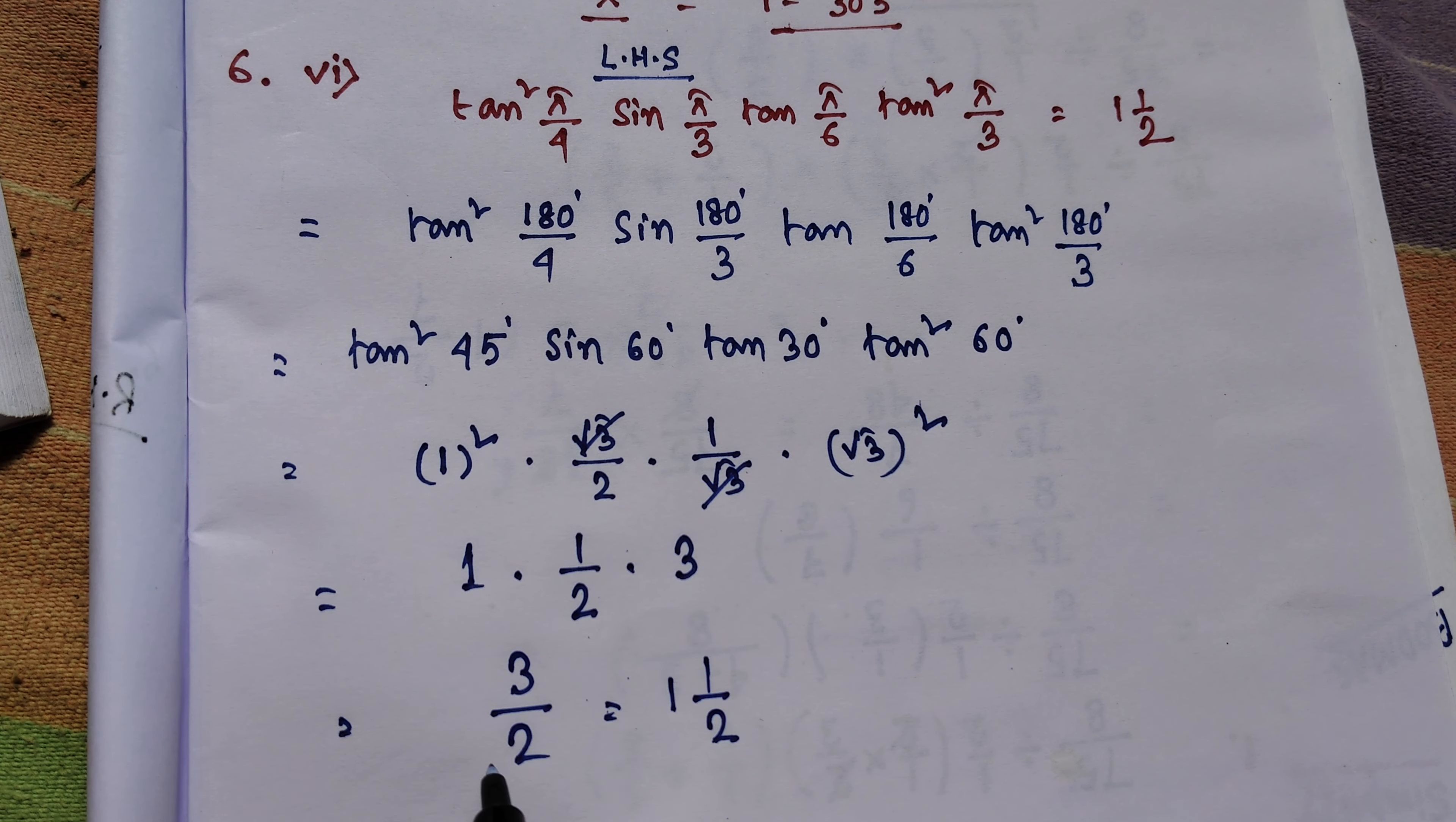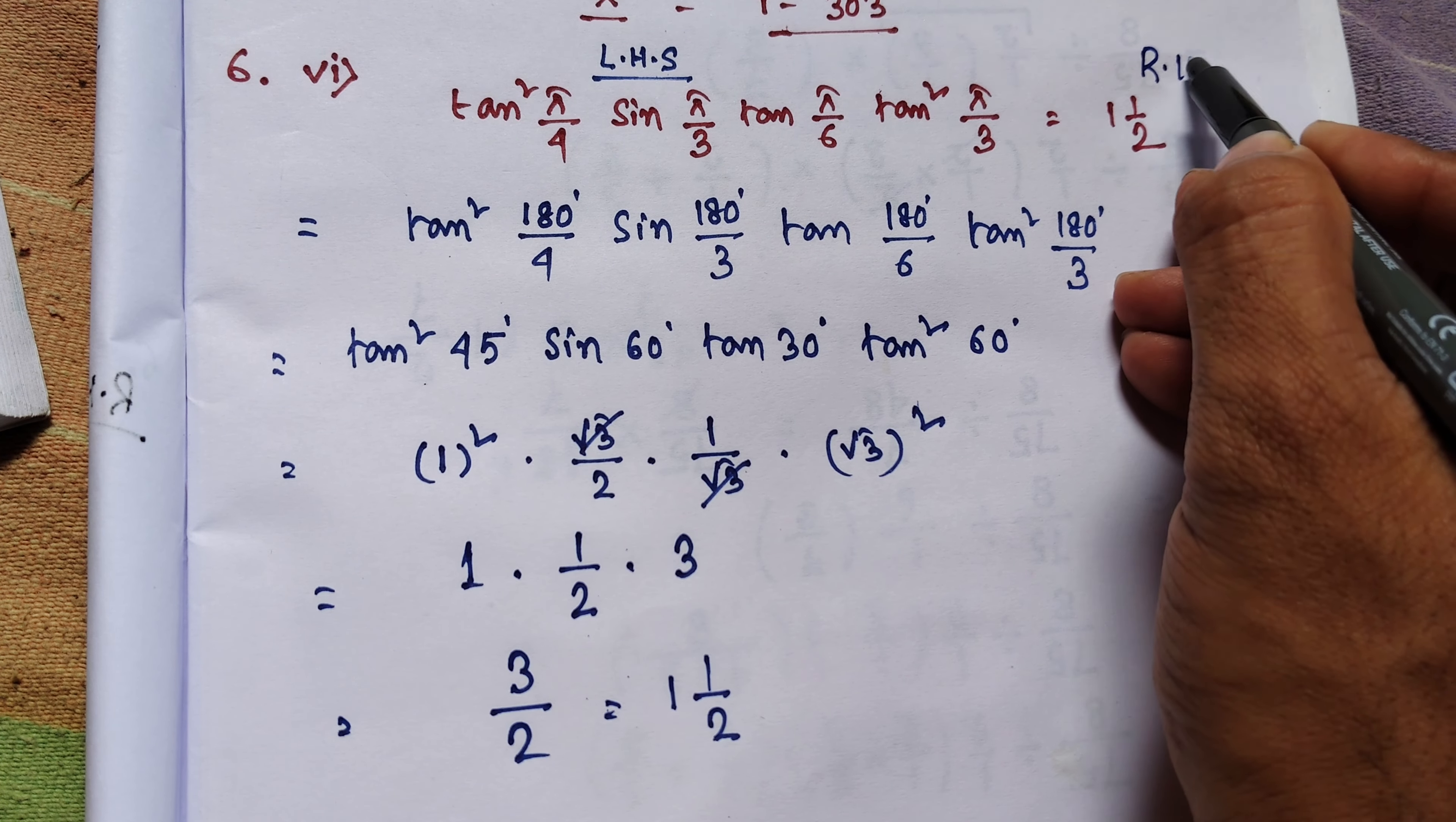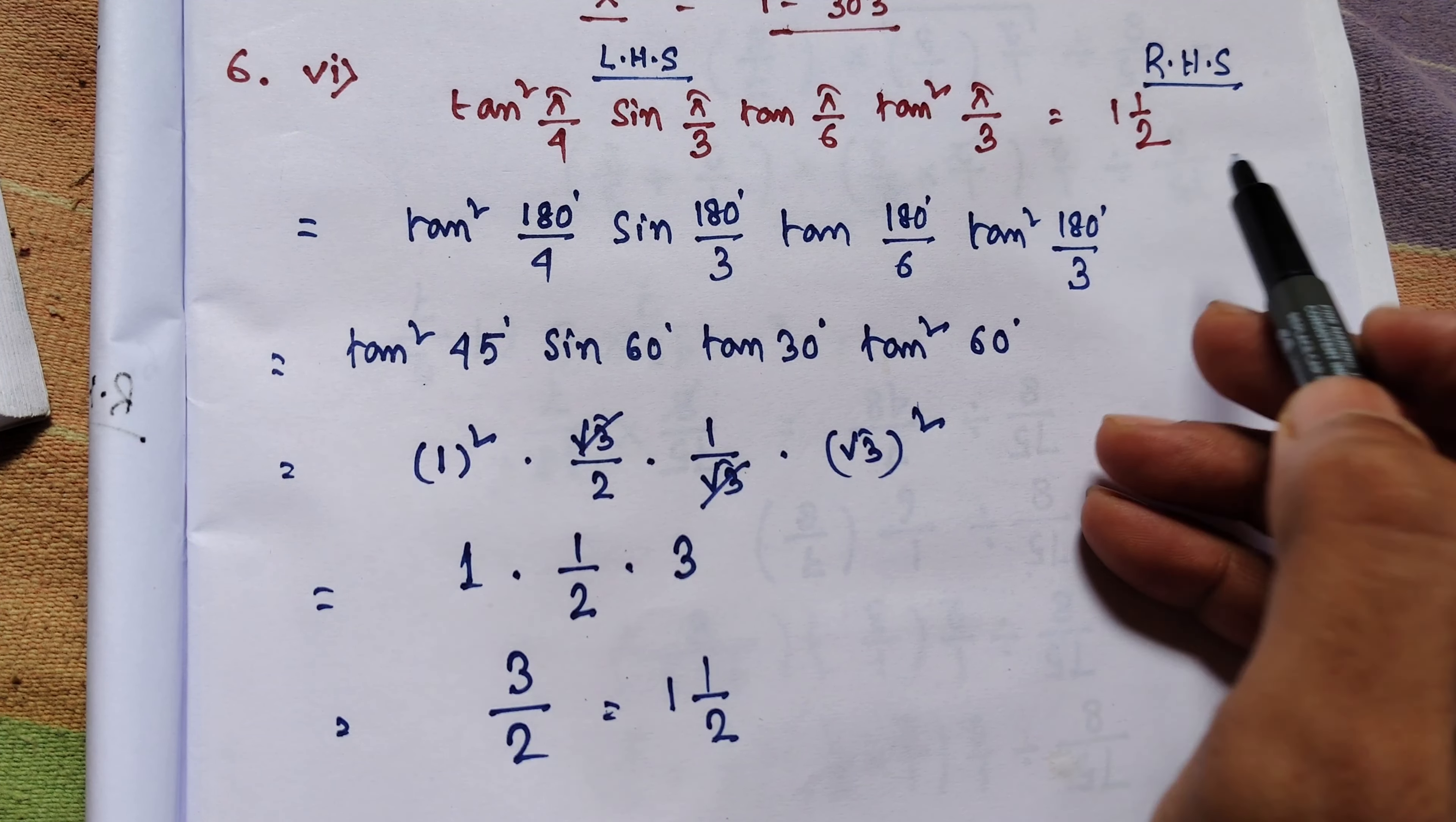This is improper fraction. And this is mixed fraction. 1 whole 1 by 2 is equal to 1 whole 1 by 2. And this right hand side is equal to 1 whole 1 by 2.